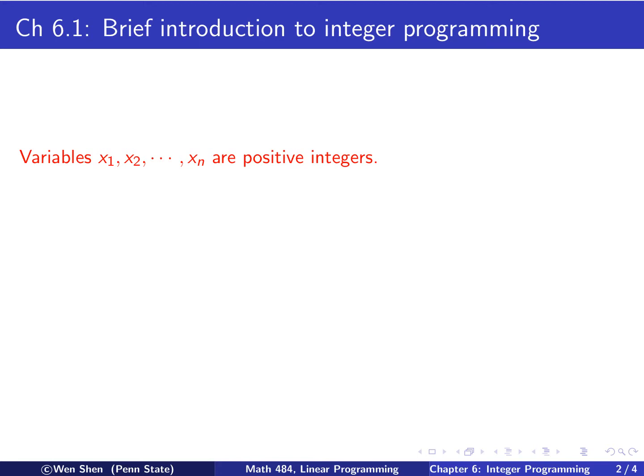Let's begin chapter 6.1. Here we will give a very brief introduction to integer programming. So first, the definition: what is integer programming? It is basically a linear programming problem where we add additional constraints on the variables. The variables are now not only restricted, but they are also natural numbers — positive integers.